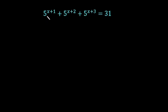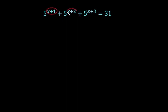Hello friends. In this lecture I am going to solve this given exponential equation: 5 raised to the power x plus 1, plus 5 raised to the power x plus 2, plus 5 raised to the power x plus 3, is equal to 31. When I see the left-hand side of this equation, in the powers there is x plus 1, x plus 2, and x plus 3.